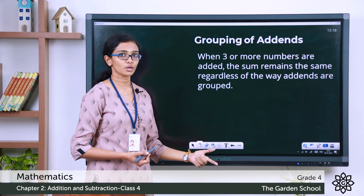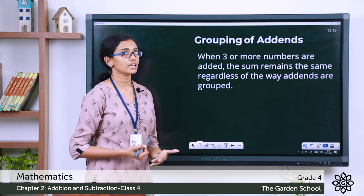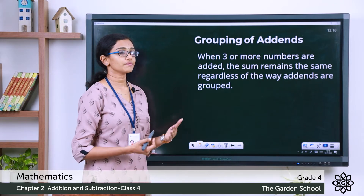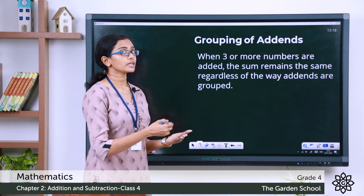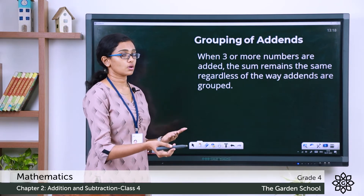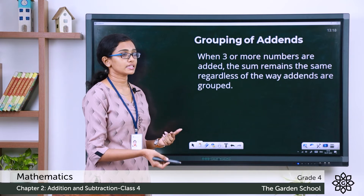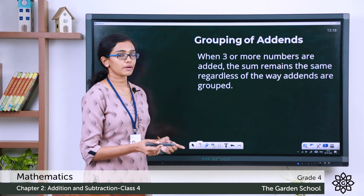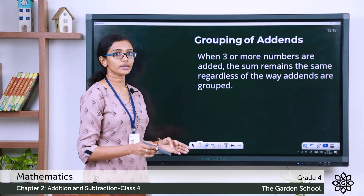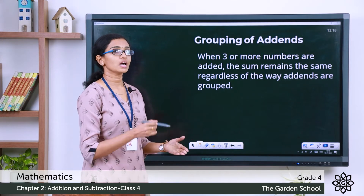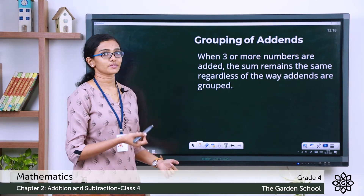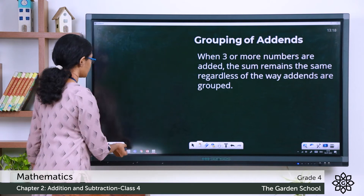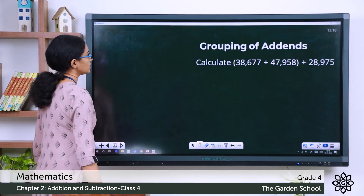Now let's see the grouping of add-ins, or the property of grouping of add-ins. It says that when we are adding three or more numbers, we can group the add-ins and it doesn't matter how we group them — the sum will remain the same. Let's see that with an example.